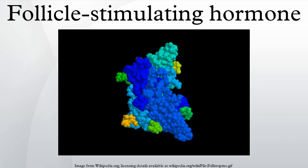Occasionally two follicles reach the antrum stage at the same time by chance, and as both are equally sensitive to FSH, both survive and grow in the low-FSH environment; thus two ovulations can occur in one cycle, possibly leading to non-identical twins. In males, FSH stimulates primary spermatocytes to undergo the first division of meiosis to form secondary spermatocytes. FSH also enhances the production of androgen-binding protein by the Sertoli cells of the testes by binding to FSH receptors on their basolateral membranes, and is critical for the initiation of spermatogenesis.